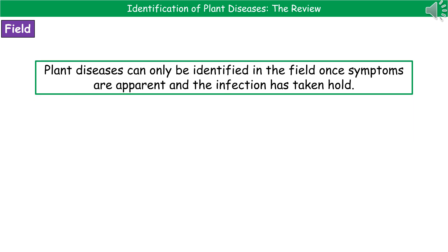The big downside of both of these field techniques for identifying plant diseases is that they can only be used once symptoms are apparent, which tells us that at that point the infection has already taken hold. This isn't a case of pre-empting the infection — we have to wait until the symptoms actually show to identify what the problem is.